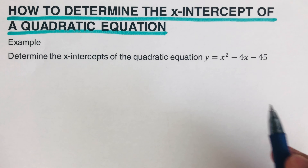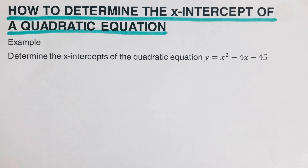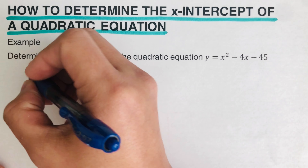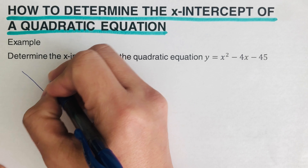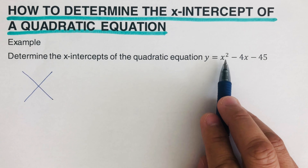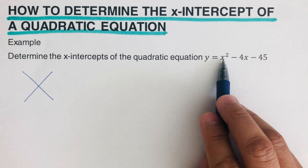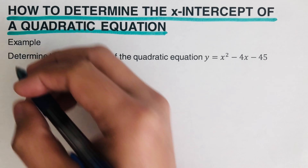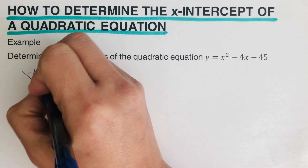The first thing we're going to do is factor the given quadratic equation. In order to factor a quadratic equation, we're going to use the box and diamond method. Starting with the diamond: the value we write on top of the diamond is the product of the first term and the last term, so x squared times negative 45 is negative 45x squared.